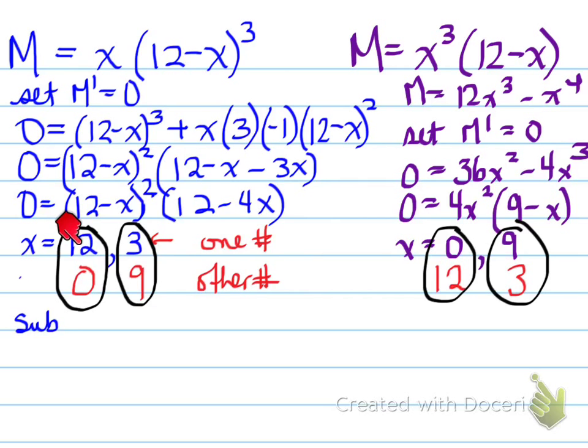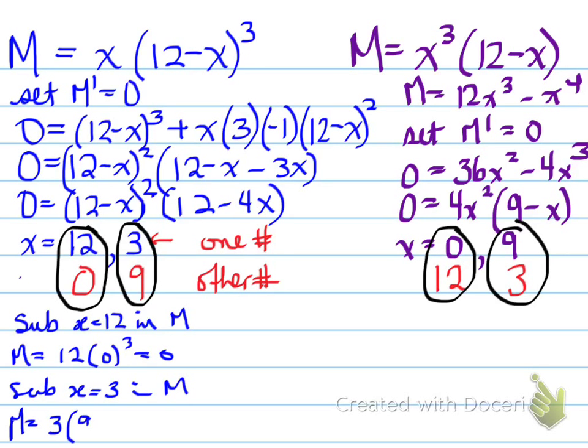So which one of these will give us a maximum product? Well, if we have zero as one of the values, for example x, what would happen is if x was zero, the whole thing would be zero. And if x was 12, the whole thing would also be zero. So ultimately, this is not going to work. If we sub x equals 12 in M in the blue section, we find out that the product is going to be zero. If I sub x equals 3 in M, I get a value of 2,187. So one of these values actually gives us a zero answer. One of these will give us 2,187.